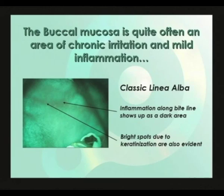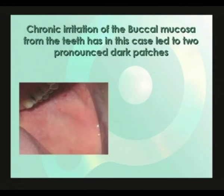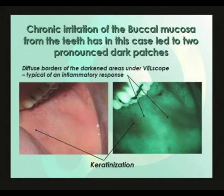This is typical of inflammation. Chronic irritation of the buccal mucosa from the teeth has in this case led to two pronounced dark patches rather than a line. Still the principle is the same — again notice the diffuse borders of the dark inflamed areas under VELscope.